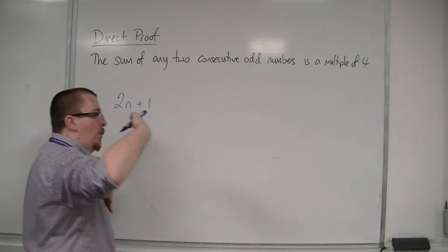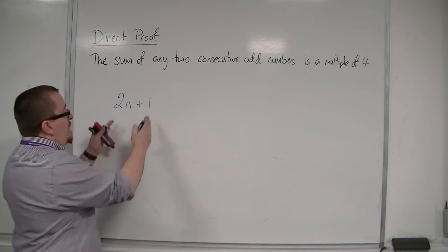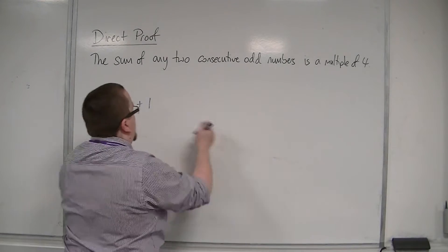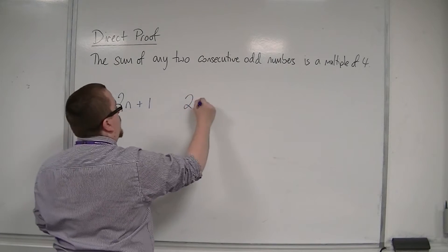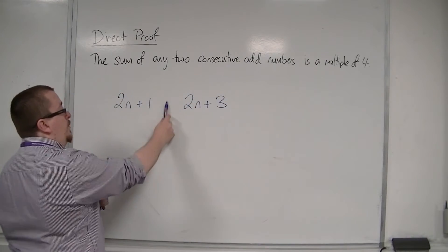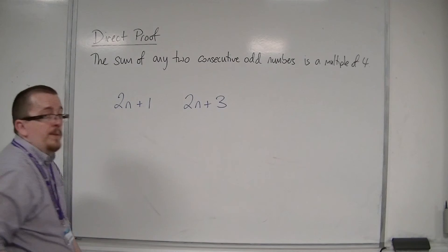And the next odd number along, you'll have an even number, then an odd number. And so we would have 2n plus 3. So 2n plus 2 would be even, then 2n plus 3 would be odd.